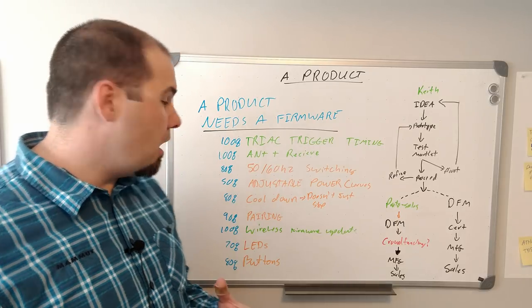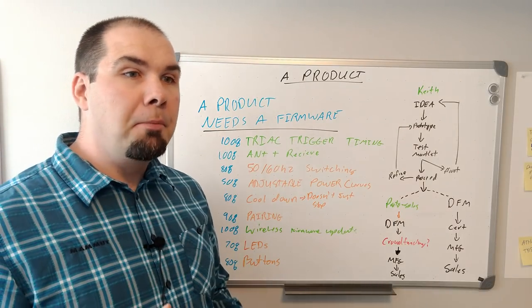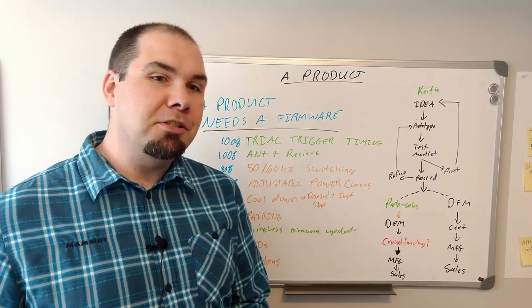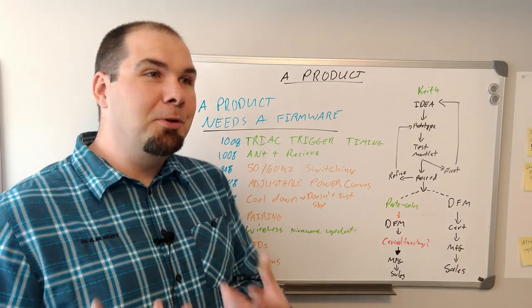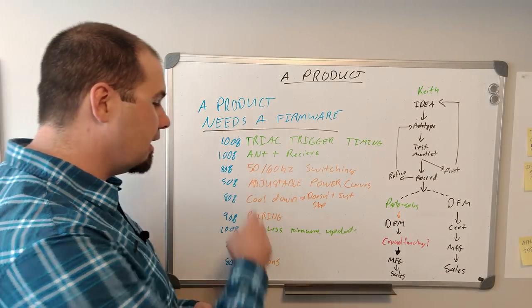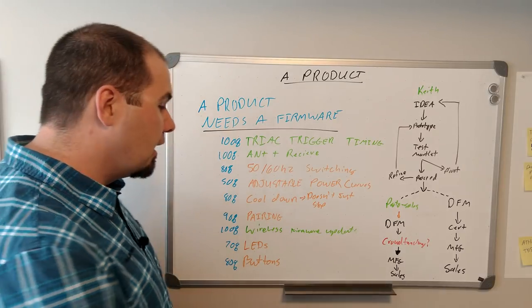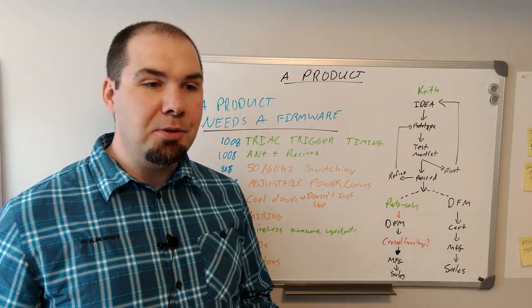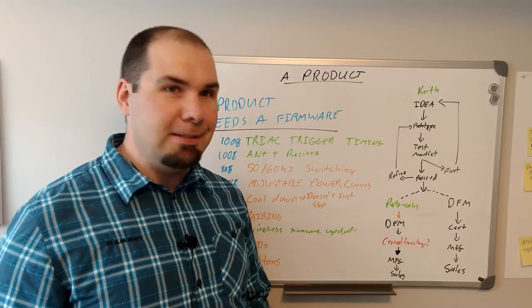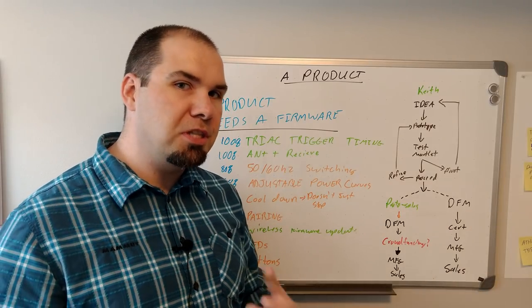So that includes things like the triggering and the ANT+ receive have been done a while ago. Improvements to 50 and 60 hertz detecting has almost been figured out, but I don't have a 50 hertz supply, so I need to look for that to test it. So I'm getting stuck on things that I need to test.